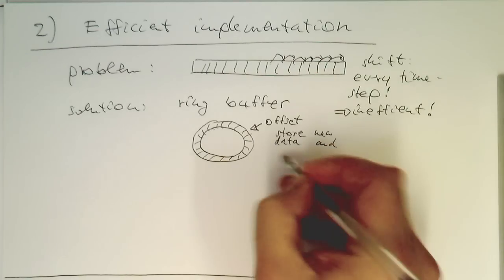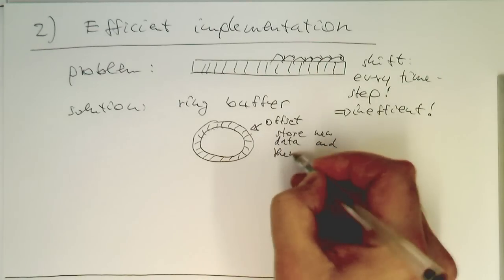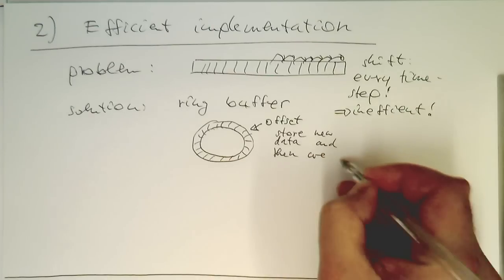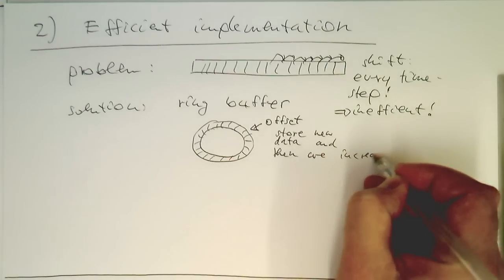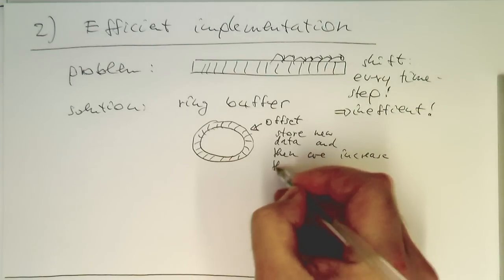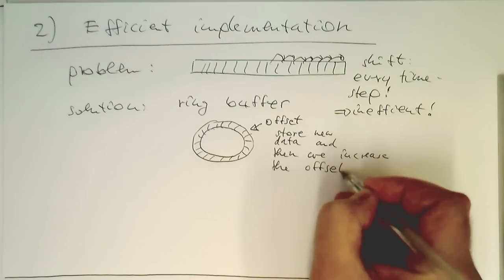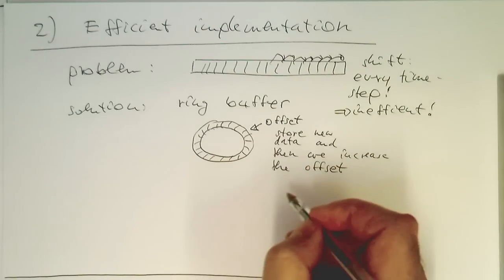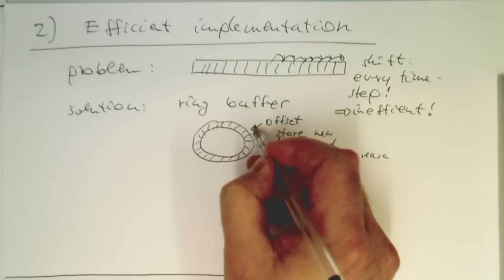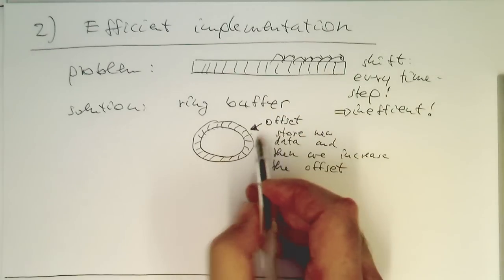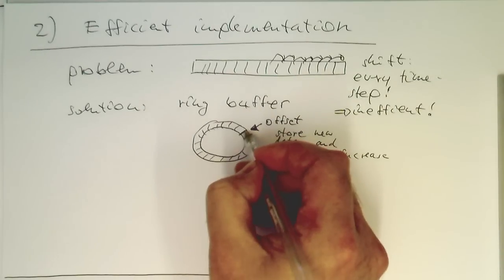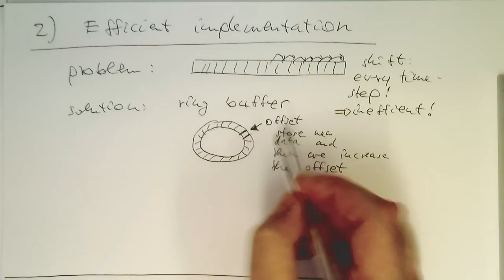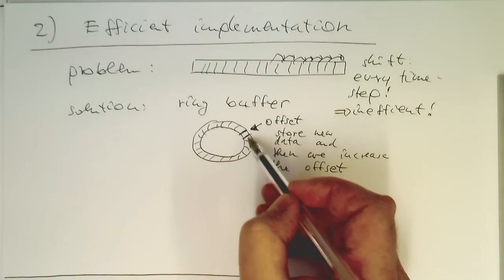And then we increase the offset instead of shifting it. So our offset just defines basically where our delay line starts. And then we are storing the new value here.